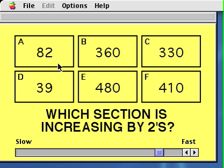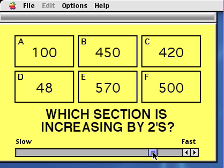And if you see A is counting 82, 84, 86, we can make it slower or faster by clicking down here or dragging the slider here.